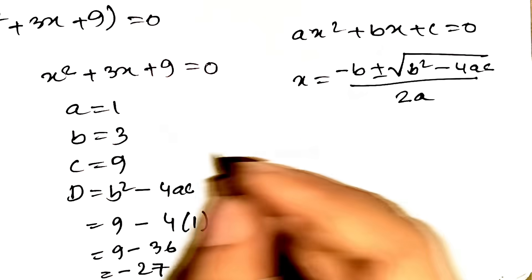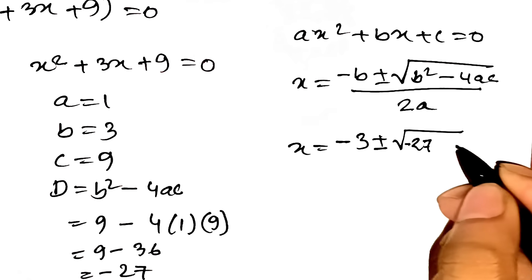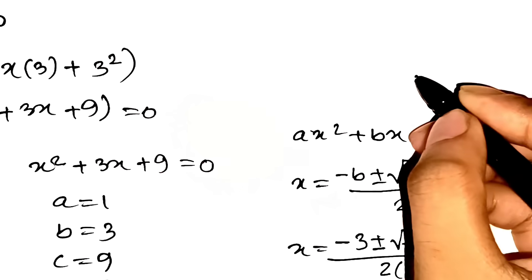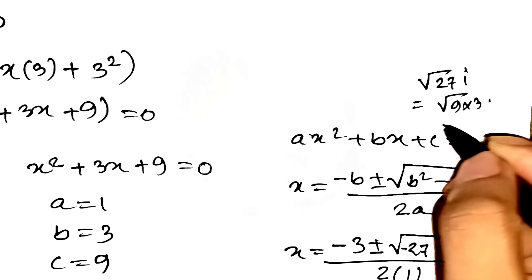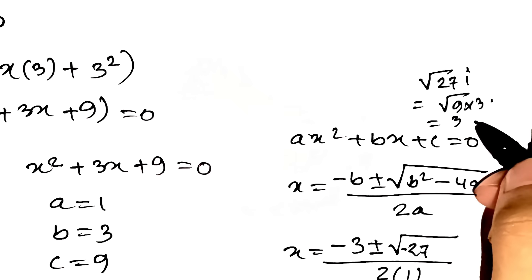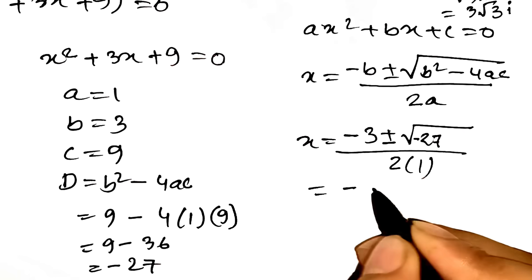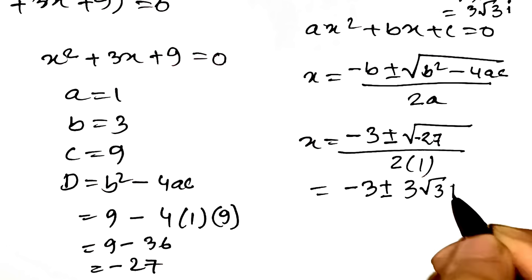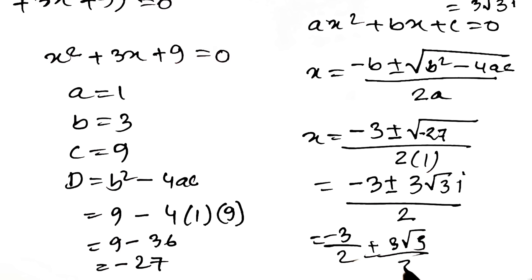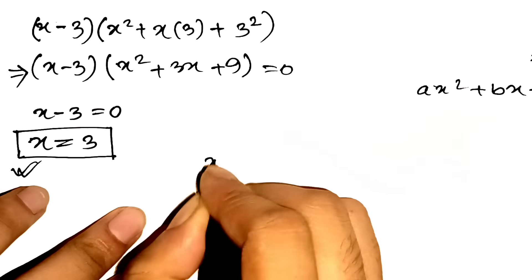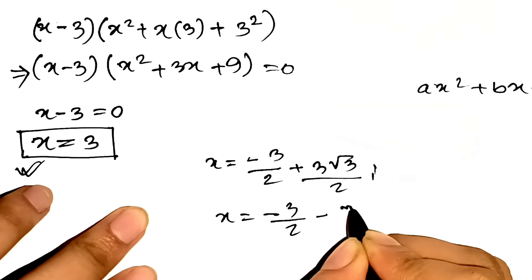No sweat — we've got this. Plugging into the quadratic formula: x equals negative 3 plus or minus the square root of negative 27, all over 2. The square root of negative 27 is the square root of 27 times i, since i is the square root of negative 1. Simplify the square root of 27: that's the square root of 9 times 3, which is 3 times the square root of 3. So the square root of negative 27 is 3 times the square root of 3 times i. Our formula becomes x equals negative 3 over 2 plus or minus 3 root 3 over 2 times i, giving us two complex roots: x equals negative 3 over 2 plus 3 root 3 over 2 times i, and x equals negative 3 over 2 minus 3 root 3 over 2 times i.